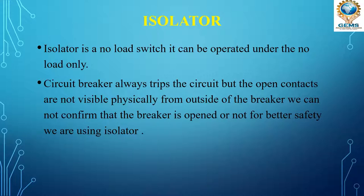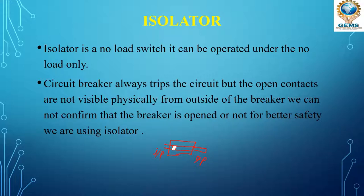For better safety we use isolators. Inside the circuit breaker there is one fixed contact with an input and an output. There is also a mobile contact. When a fault occurs, this mobile contact moves away and the circuit is opened.